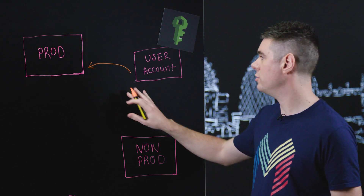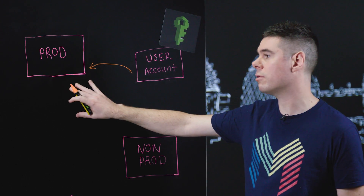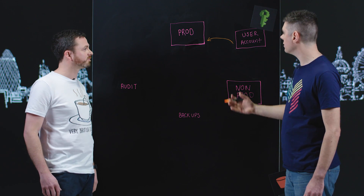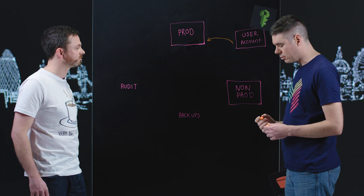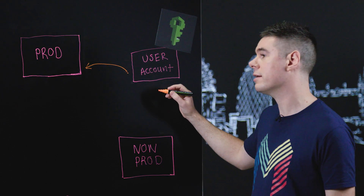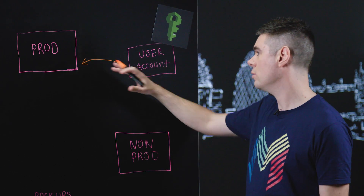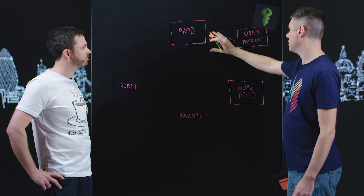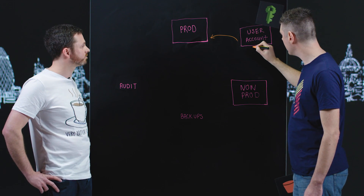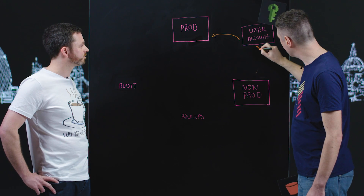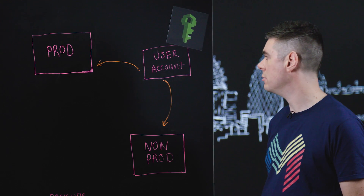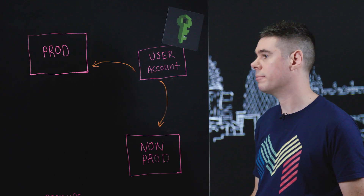We use STS to assume mostly read-only roles to production unless you're actually doing something to production. And the other thing Amazon told us, which was a really good piece of advice, was to have a separate non-production account. We use Terraform to basically build the same production infrastructure but into a non-production account, and again different people have different levels of access, all organized through the same user account into the non-production account.